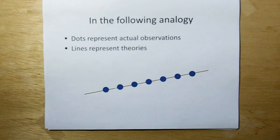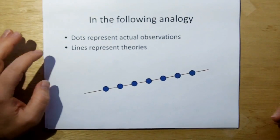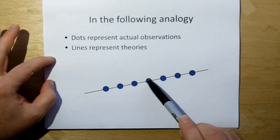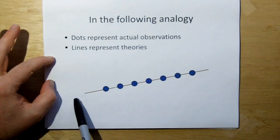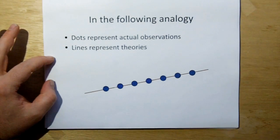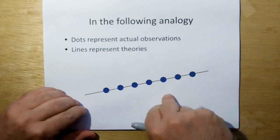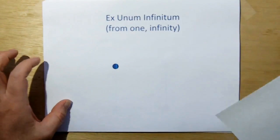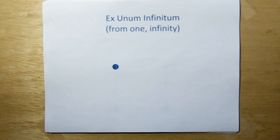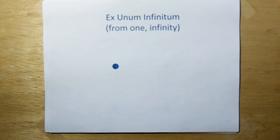So again, we use this analogy a lot in the Rules of Acquisition series, where we use dots to represent observations, and we use a line to represent the theory that fits those observations. Theory or model. And so ex unum infinitum, from one infinity.